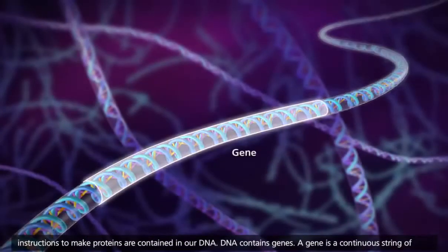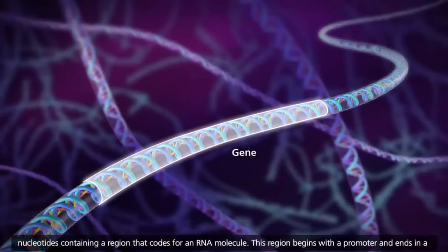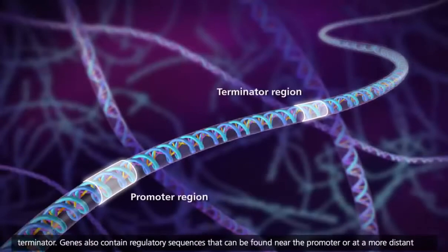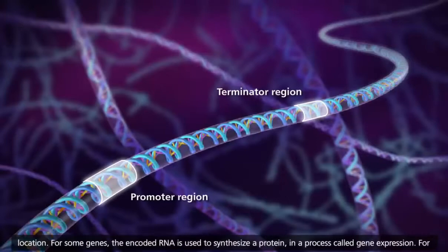DNA contains genes. A gene is a continuous string of nucleotides containing a region that codes for an RNA molecule. This region begins with a promoter and ends in a terminator. Genes also contain regulatory sequences that can be found near the promoter or at a more distant location.